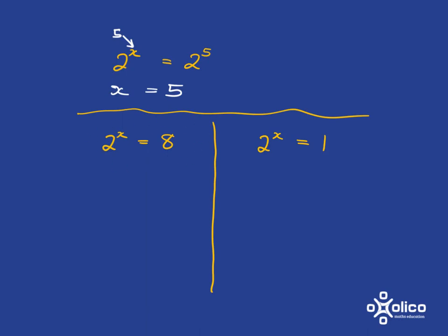what can we do? We know that it's really easy to solve if we have 2 to the x is equal to 2 to the something. So all we have to do is try and get 8 into the format 2 to the something. So you should know quite well by now that 8 is just 2 cubed,